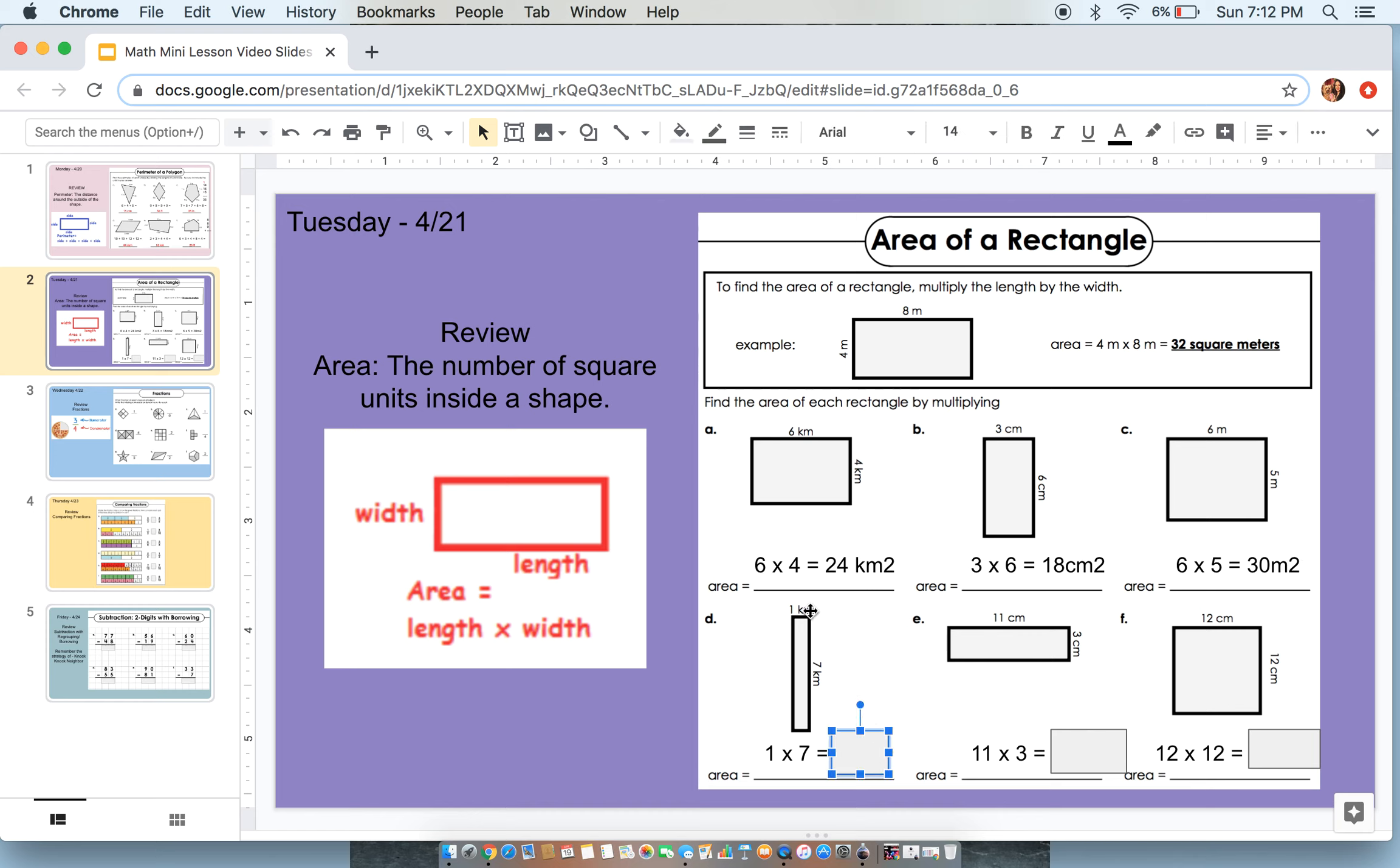Moving on. This little tiny shape. So we are going to be multiplying 1 times 7, which is going to give us 7 kilometers squared.